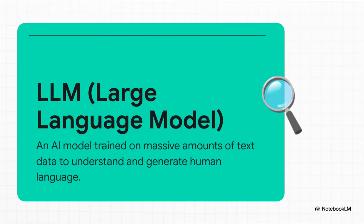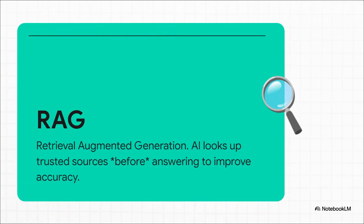You have definitely heard this one — LLM. It stands for Large Language Model. This is the specific type of AI we've mostly been talking about. It's been trained on a truly massive chunk of the internet to become an expert in understanding and generating human language. All the big names you know — ChatGPT, Gemini — they're all LLMs. But how do we make these LLMs more factual and up-to-date? That's where RAG comes in. It stands for Retrieval Augmented Generation. Before the AI answers your question, the RAG system retrieves fresh info from a reliable source to augment its response. It's kind of like giving the AI an open book test — it makes the answers so much better.